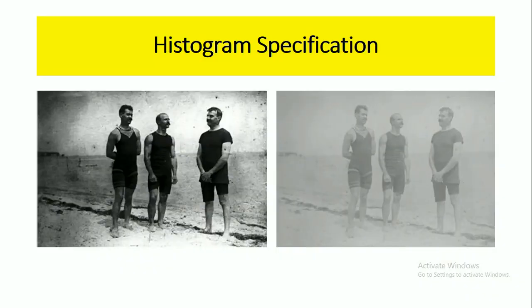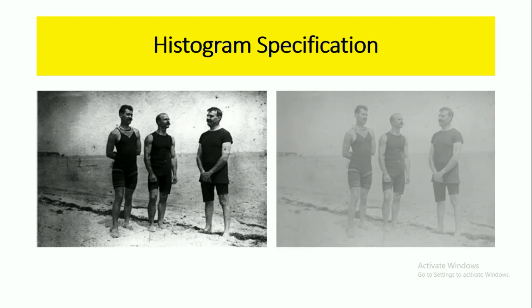Before going to histogram specification, if you see these two images, this image is a better quality image and this image is a low contrast image. The scene is the same, but these two images are captured by different cameras. By using histogram specification, we will map the values of this original image with the target image mapping values so that we will get a better quality output image.